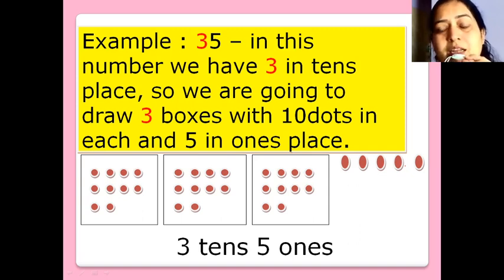Orally means, if I ask you, the number is 42. So, you are going to tell me now, in 42, how many boxes you are going to draw? Correct. 4 boxes. And in each box, how many dots? 10. Perfect. Which number was there in ones place? 2. Perfect. So, you are going to draw how many dots outside? Correct. 2.